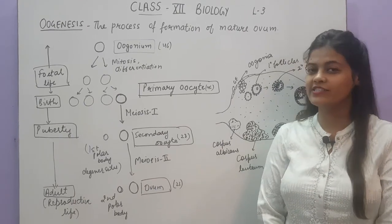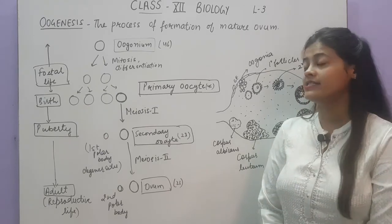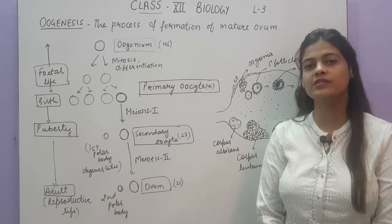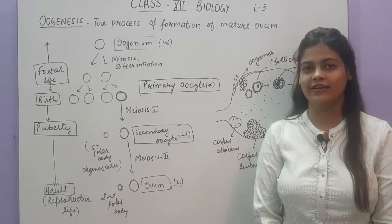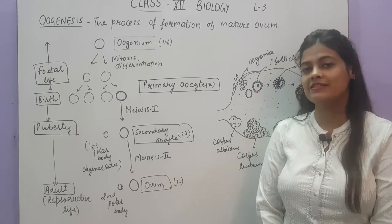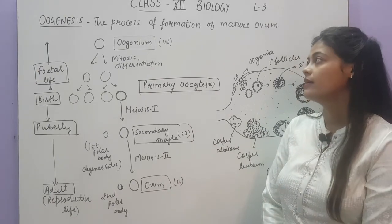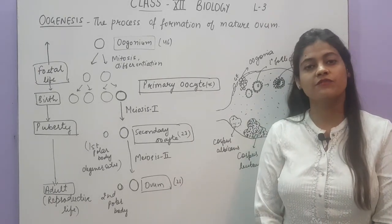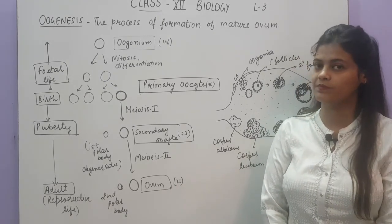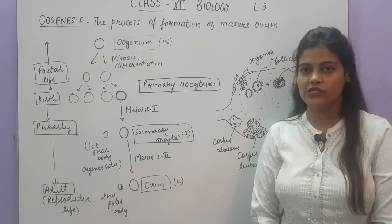Hello students. Let's start with today's biology class of class 12. Yesterday we started with gametogenesis, in which we discussed spermatogenesis. Today we will study oogenesis, which is the production or synthesis of the mature ovum in females. As spermatogenesis is the process of formation of sperms, here we will discuss the process of formation of ovum. Oogenesis is quite different from spermatogenesis.